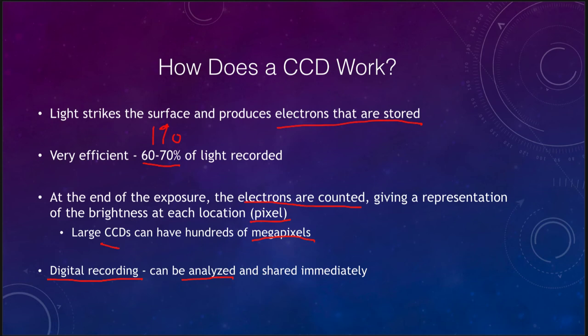With a photographic plate you would have to go through the developing process at the end of the night, and by the time you see the results it's too late to make any corrections. With CCDs, you can see things in real time, and the digital files can be shared immediately — you can send an image to a colleague across the country or across the world to share or compare findings. So CCDs are the primary detector used now for astronomical imaging.